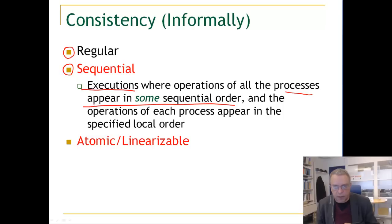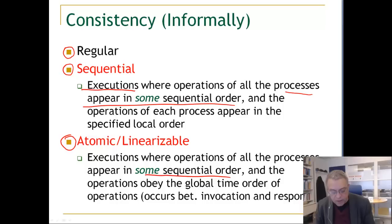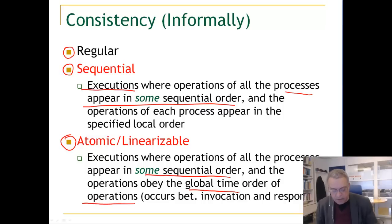Each process executes its reads and writes, and this constraint on the order of reads and writes in each process should be obeyed. Atomic or linearizable executions are executions where operations of all processes again appear in some sequential order, and the operations not only obey the local order within each node, but there also has to be a global order of all operations such that each operation occurs between its invocation and response.